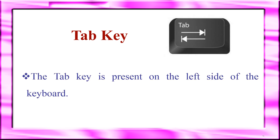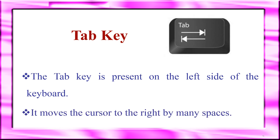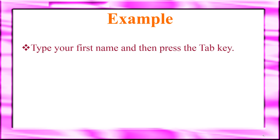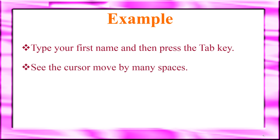The next key is the tab key. Look at this picture — this is the tab key. The tab key is present on the left side of the keyboard. It moves the cursor to the right by many spaces. For example, type your first name and then press the tab key — see the cursor move by many spaces.